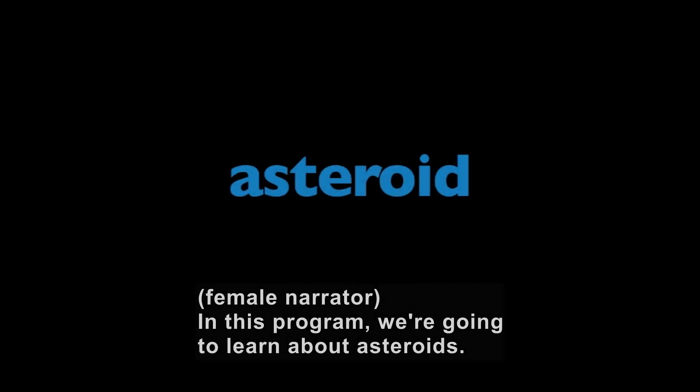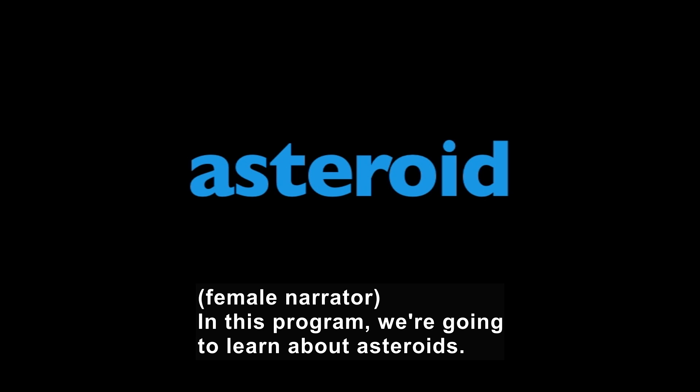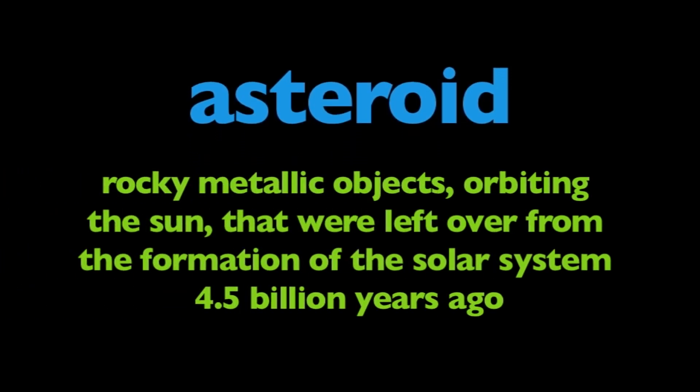In this program, we're going to learn about asteroids. What are asteroids? Asteroids are rocky, metallic objects orbiting the sun that were left over from the formation of the solar system 4.5 billion years ago.